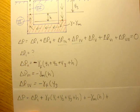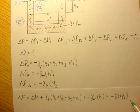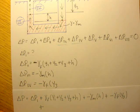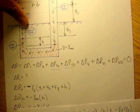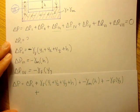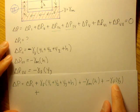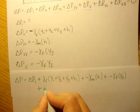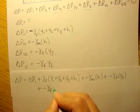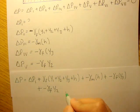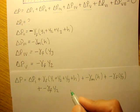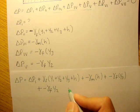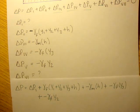Plus the pressure change of path 3, which includes negative gamma_m times h. Then the change in pressure of path 4 is negative gamma_F times y3. The change in pressure of path 5 was negative gamma_F times y2. And the change in pressure of path 6 — we said that was a question mark too.